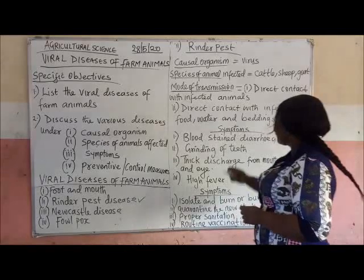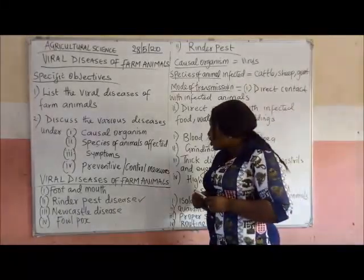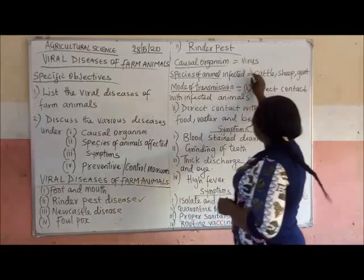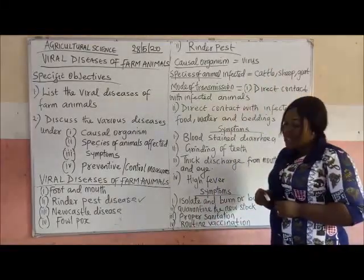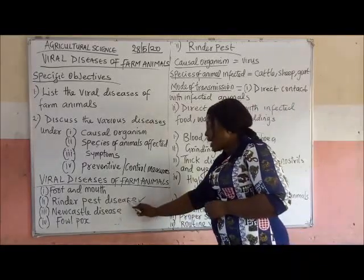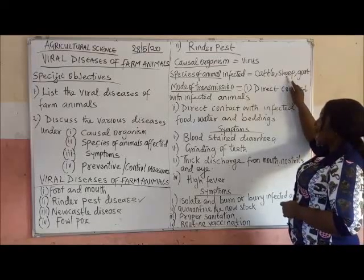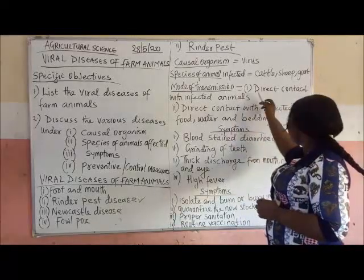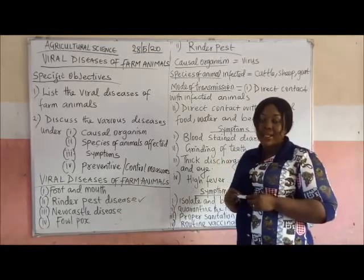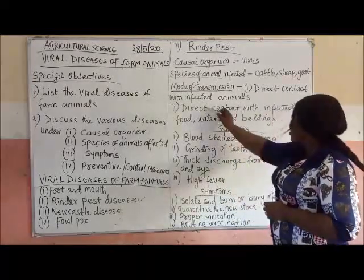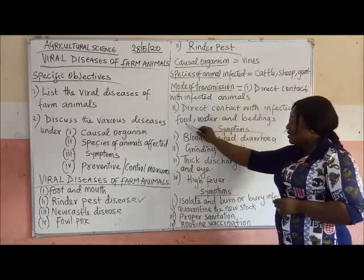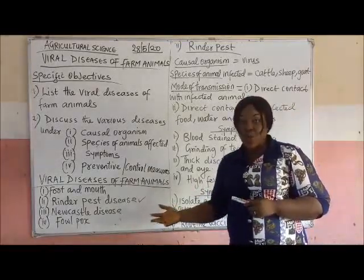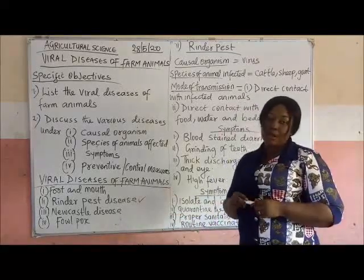Starting with Rinderpest. We already know that Rinderpest is a disease caused by a virus in farm animals. The causal organism for Rinderpest is virus. The species of animals that suffer from Rinderpest are cattle, sheep, and goats. They contract this disease when they come in contact with an already infected animal, or through direct contact with infected water, food, and bedding materials like sawdust or dry grasses kept on the floor in the farm.